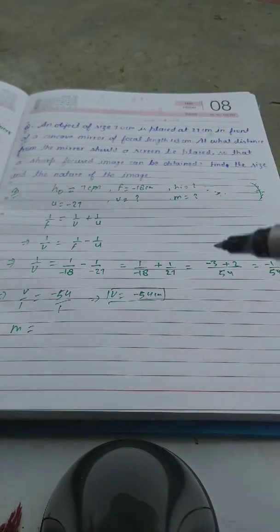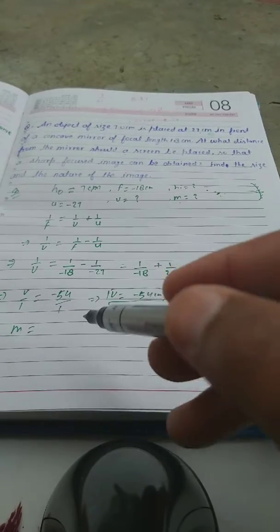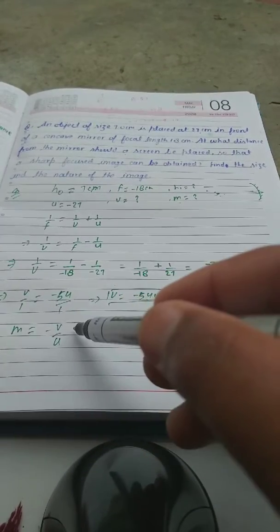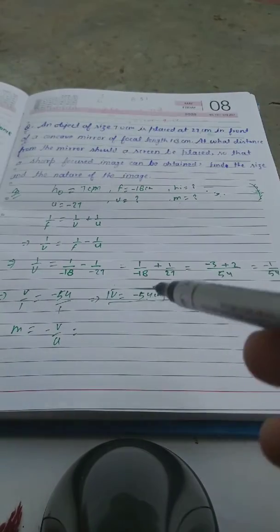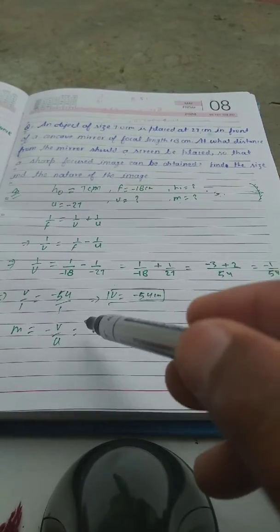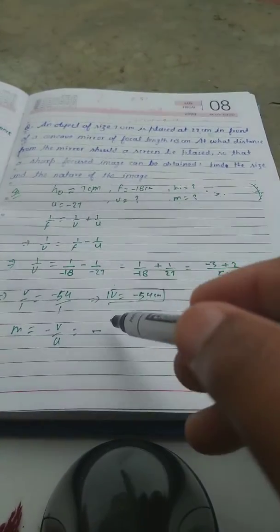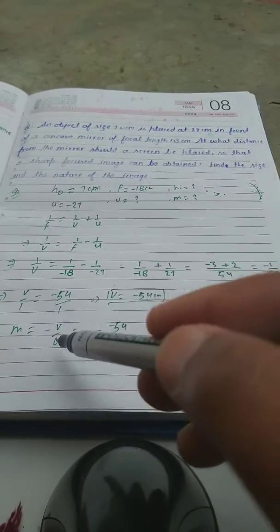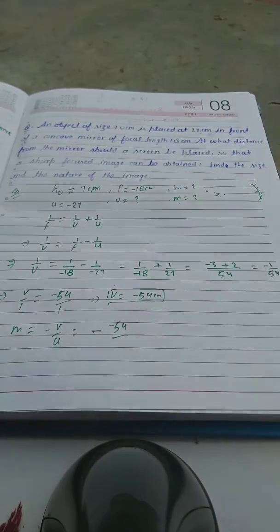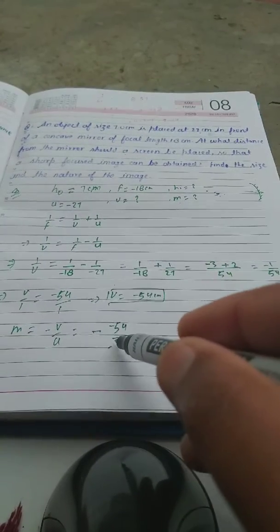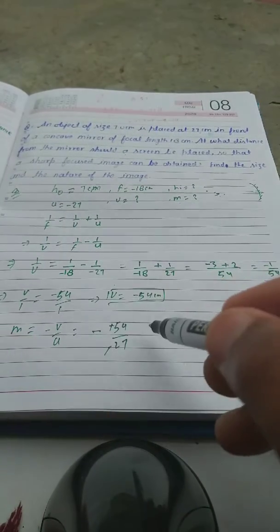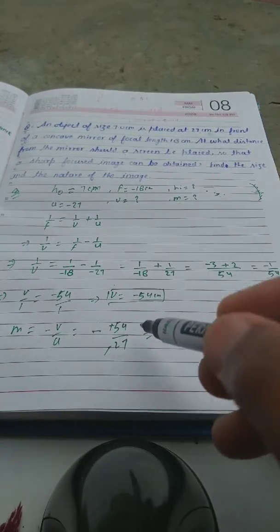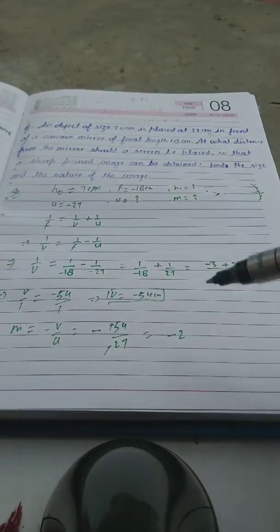Now for finding the nature of the image, we will find the magnification. The magnification formula is m = -v/u. v is minus 54 and u is minus 27. The two minus signs cancel, so it becomes minus 54 divided by 27, giving magnification as minus 2.